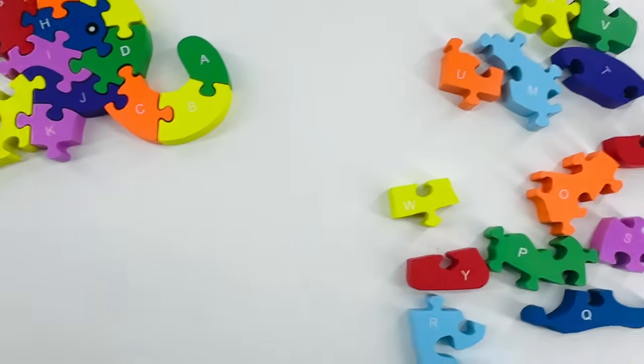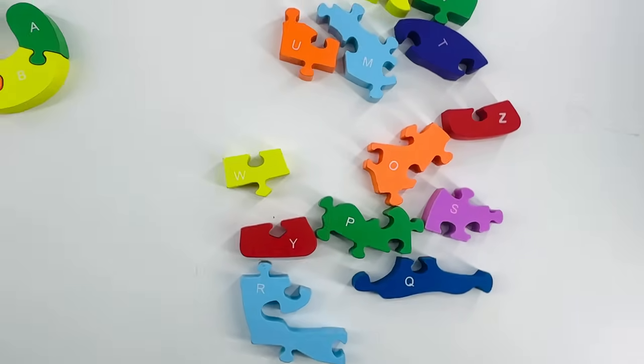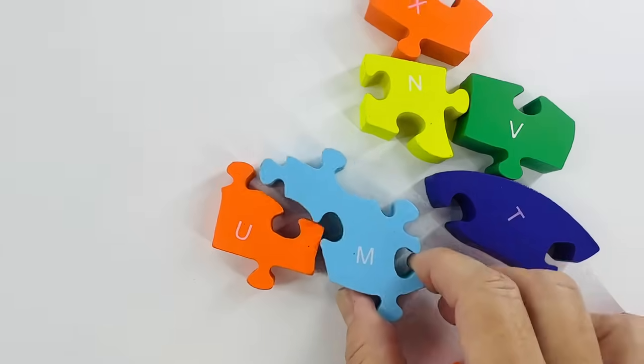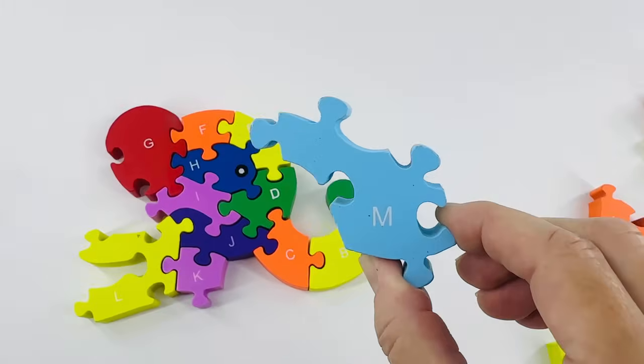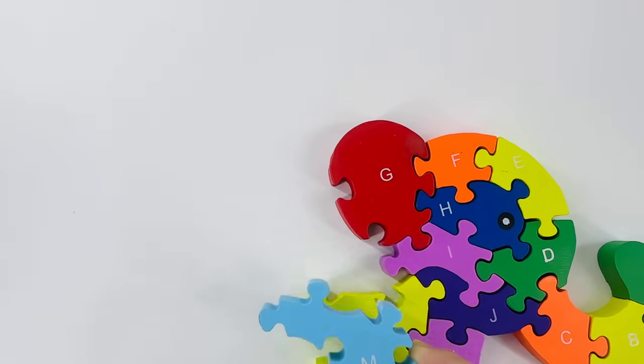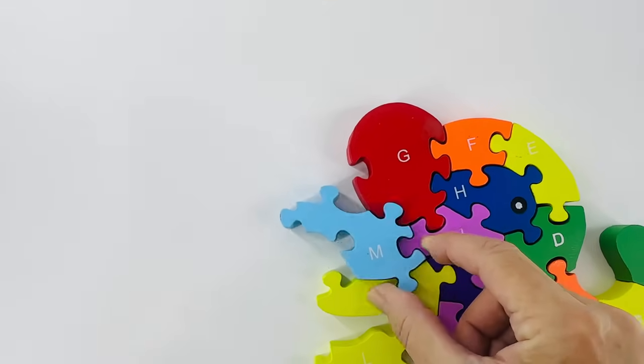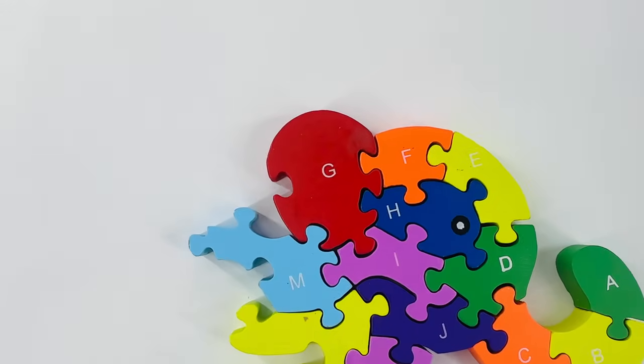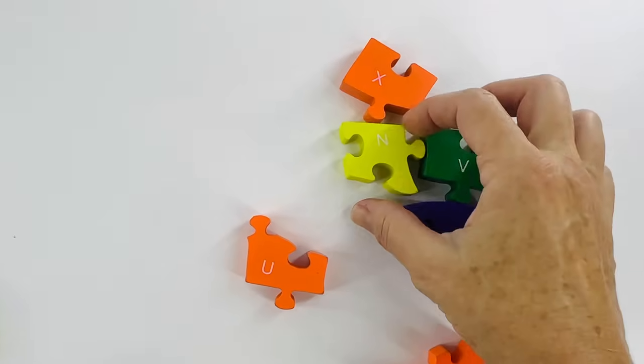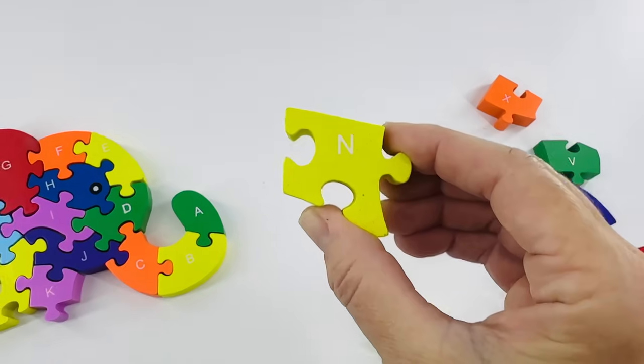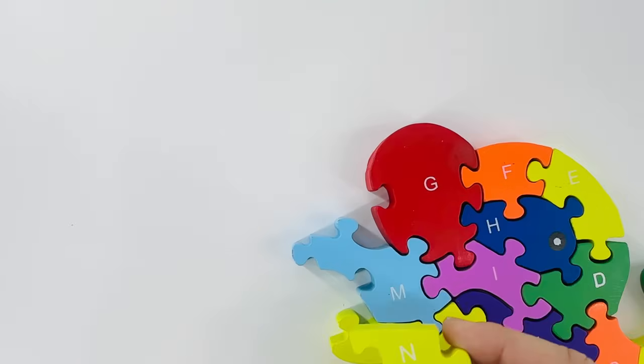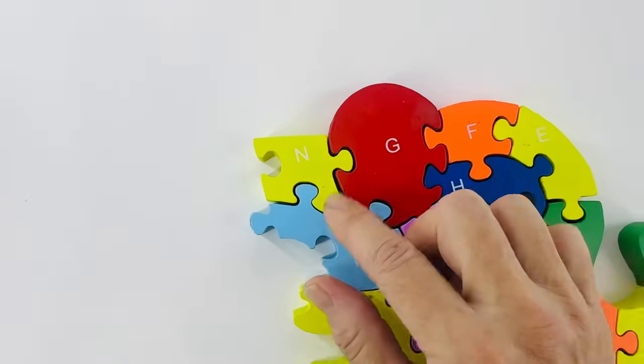I think that's it right there. After the letter L is the letter M. Do you see the letter M? Here it is. This one is light blue. M is for monkey. This is a fun shape. I think it goes right here. It does. We did it. After the letter M is the letter N. Right here. N is for noodles. It looks like it fits right here. Let's see. It does.